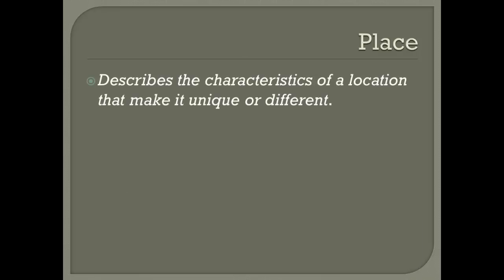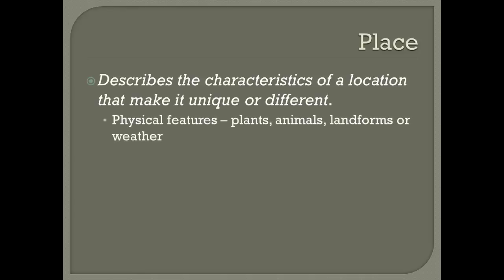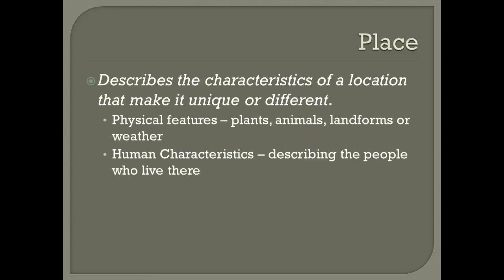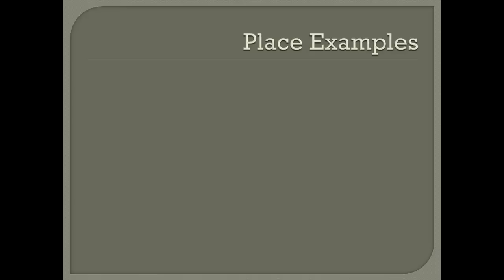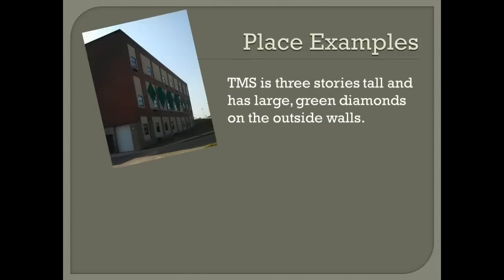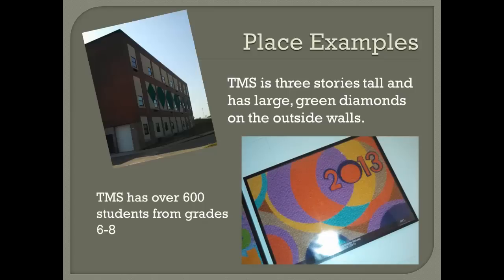The next theme is Place. Place describes the characteristics of a location that make it unique or different. You can describe a place in two different ways: first by looking at its physical features, which includes the plants, animals, landforms, and climate; and you can also describe the human characteristics, which is simply describing the people who live there. A physical characteristic of Tomah Middle School is that it is three stories tall and has large green diamonds on the outside walls. For a human characteristic, Tomah Middle School has over 600 students between grades 6 and 8.